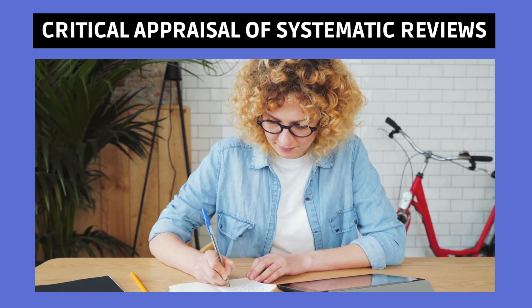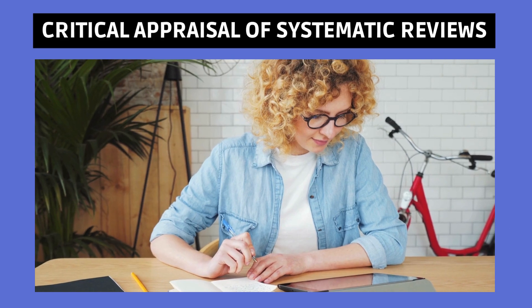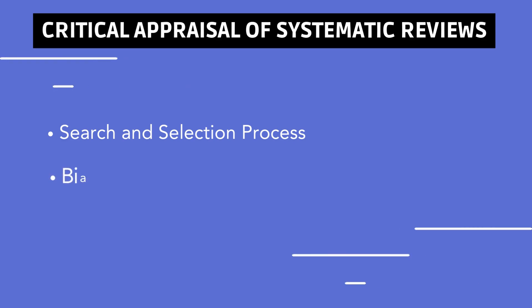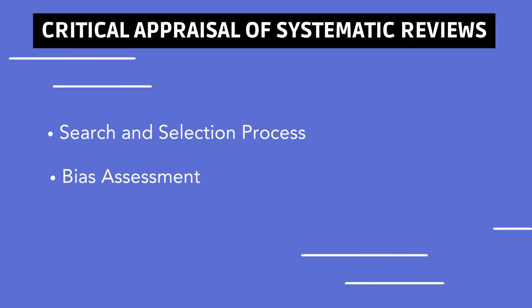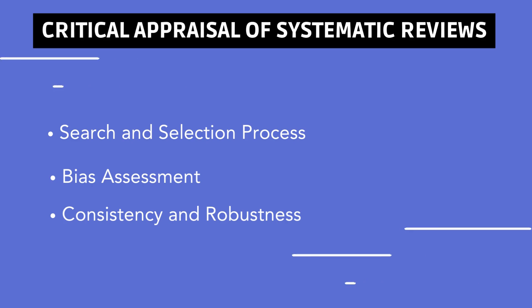Critical appraisal of systematic reviews and meta-analyses involves evaluating the following. Search and selection process: assess the comprehensiveness of the search strategy and the appropriateness of the inclusion-exclusion criteria. Bias assessment: examine how the review addressed potential biases in the included studies and the impact of these biases on the overall findings. Consistency and robustness: evaluate the consistency of the findings across studies and the robustness of the results through sensitivity analyses and exploration of heterogeneity.